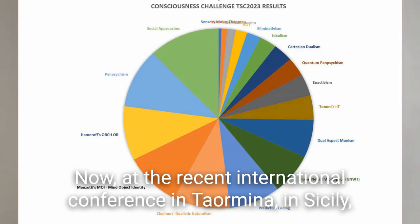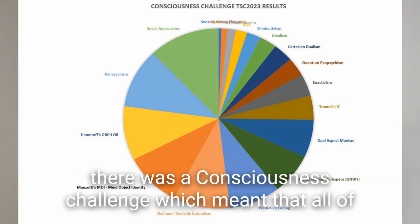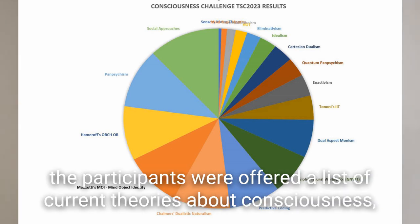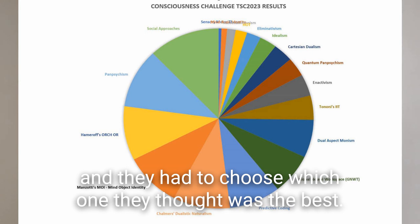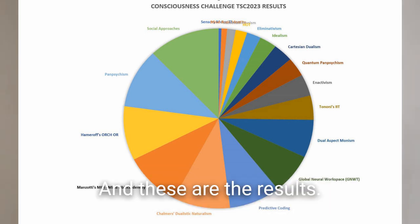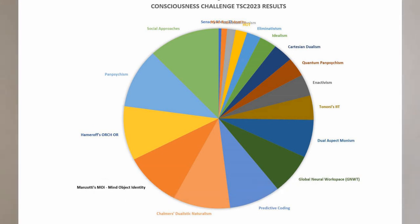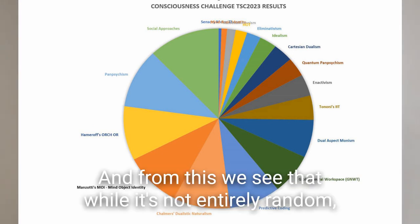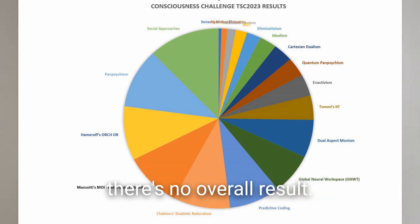At the recent international conference in Taormina, in Sicily, there was a so-called consciousness challenge, which meant that all of the participants were offered a list of current theories about consciousness and they had to choose which one they thought was the best. These are the results, and from this we see that while it's not entirely random, there's no overall result.